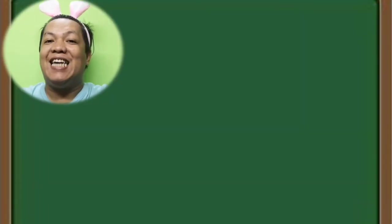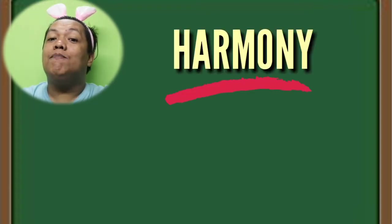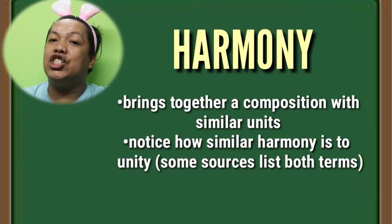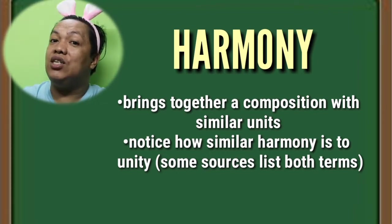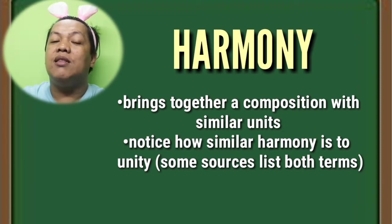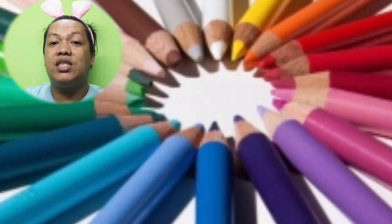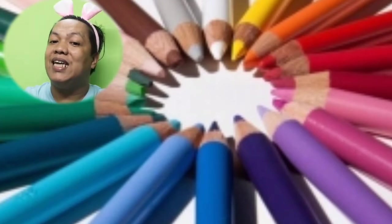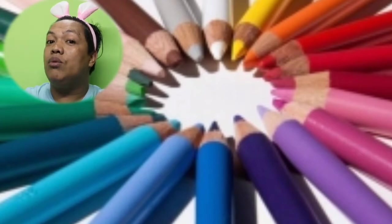The fourth visual design element refers to harmony. Harmony brings together a composition with similar units. Notice how similar harmony is to unity. The best examples projected on your screens are the harmony of colors and the harmony of these drawings.